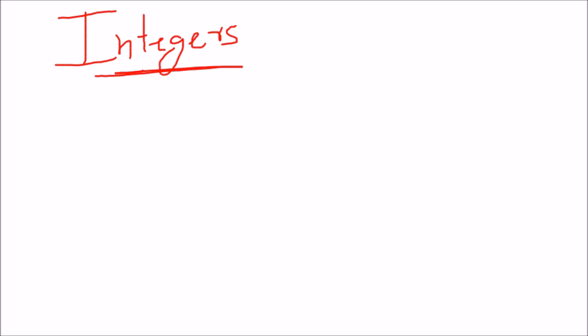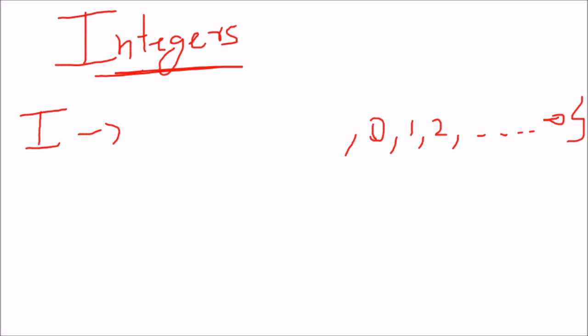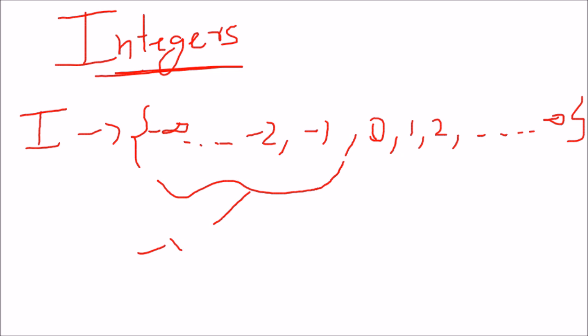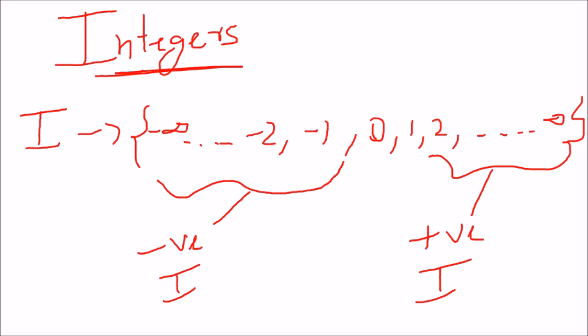Moving on to integers. The basic definition of integers is that they are the set of whole numbers and their opposites. Whole numbers include all the positive integers going up to infinity. Now integers also include the opposite side — minus 1, minus 2, and so on up to minus infinity. These are the negative integers, and the positive ones are the positive integers.